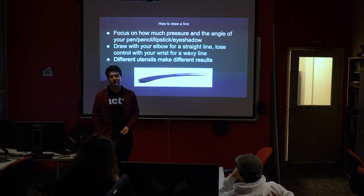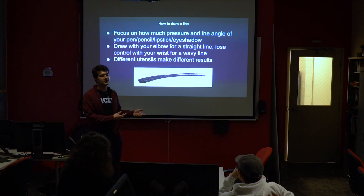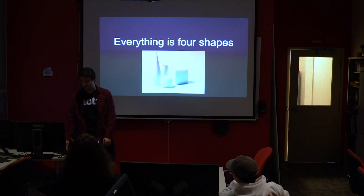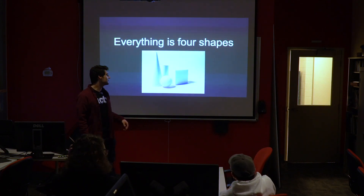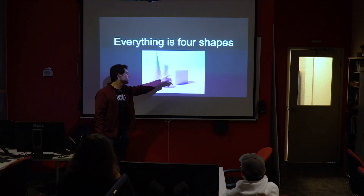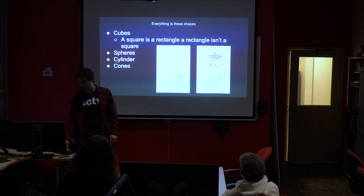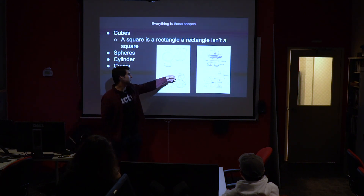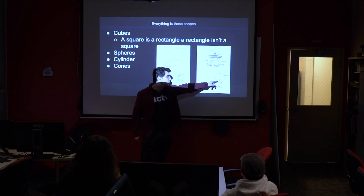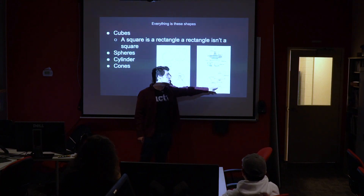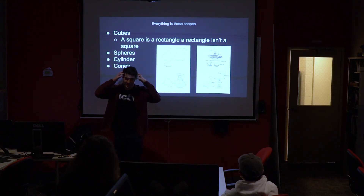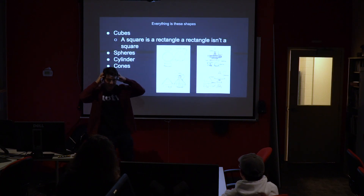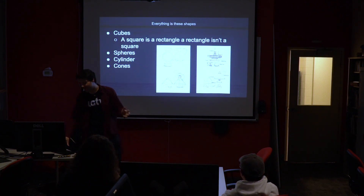Different utensils will make different results — pencils will have a different effect than a pen. Everything in the world is four shapes: a cone, a sphere, a cube, and a cylinder. This is the breakdown of what they are. A vase, for instance, is really just these four objects combined. A lampshade is really just a cone plus a sphere. A human head is kind of just like a big cube-sphere — it's not anything more complicated than that, and that's really what you should think about.